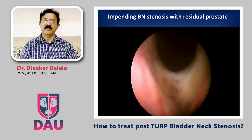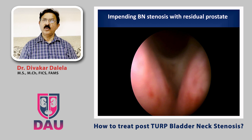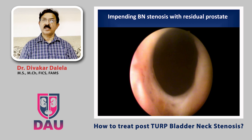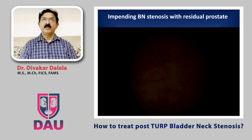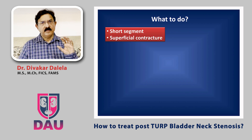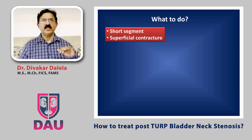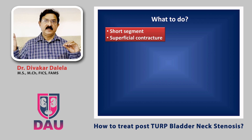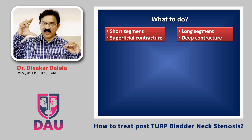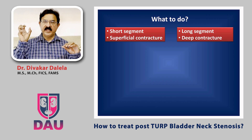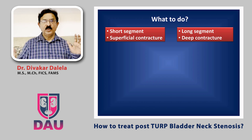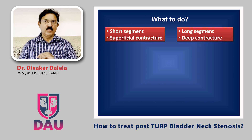This is a case who is evolving into bladder neck stenosis and you do not know what will happen in future — he may develop more stenosis. If I were to give you a small algorithm for managing these patients: if the patient has a short segment vertically — the vertical height is more like a septum of bladder neck stenosis and the degree of contracture process is very superficial — or on the other side, if the patient has a vertically long segment of stenosis and the degree of fibrotic process is very deep. You isolate these patients into either group.